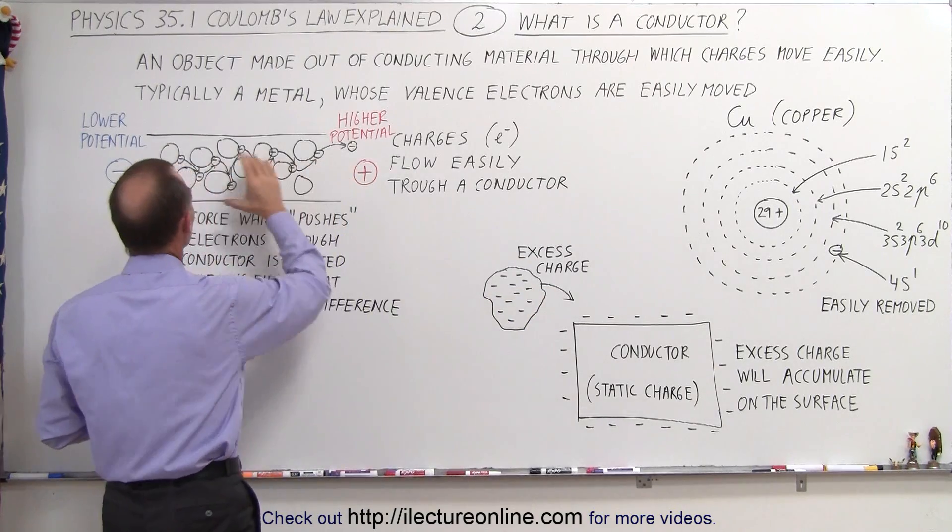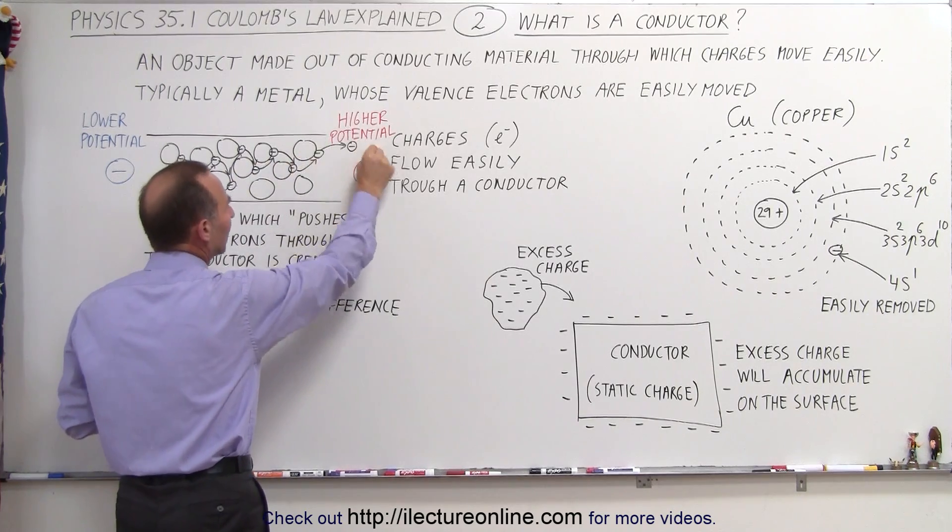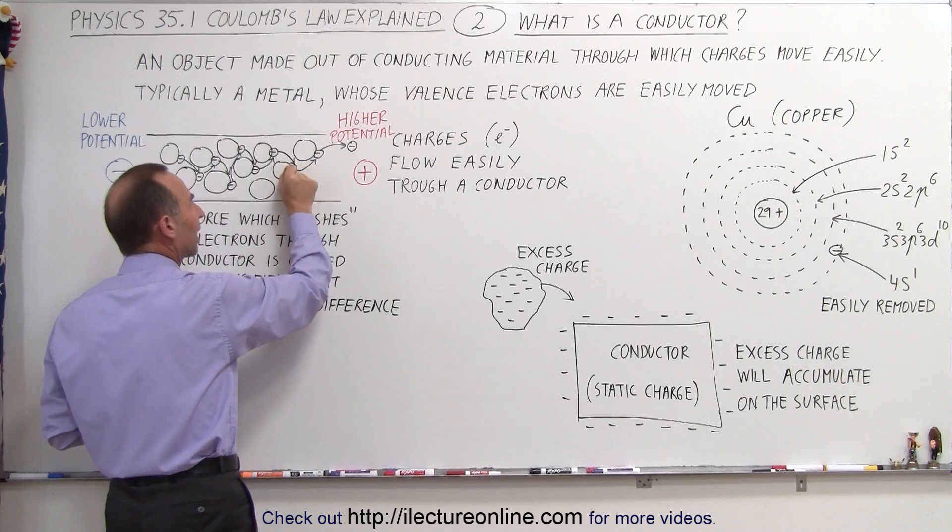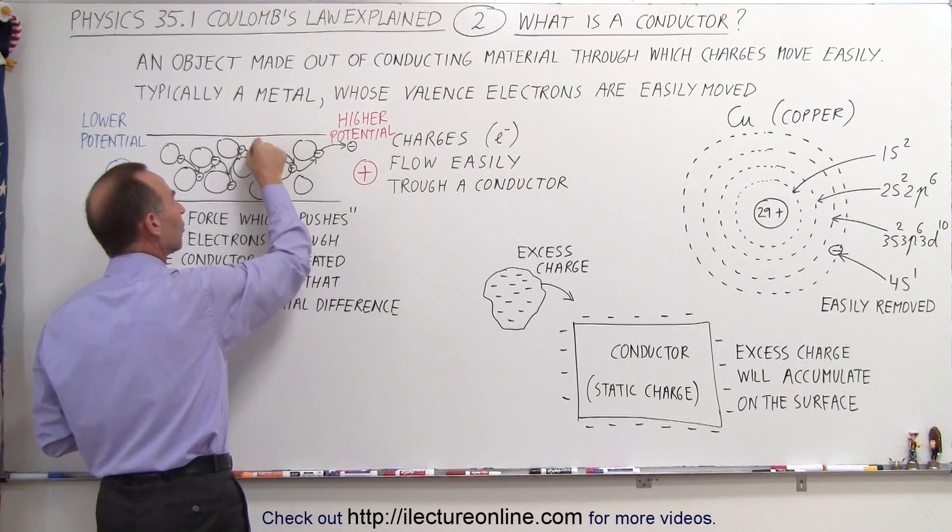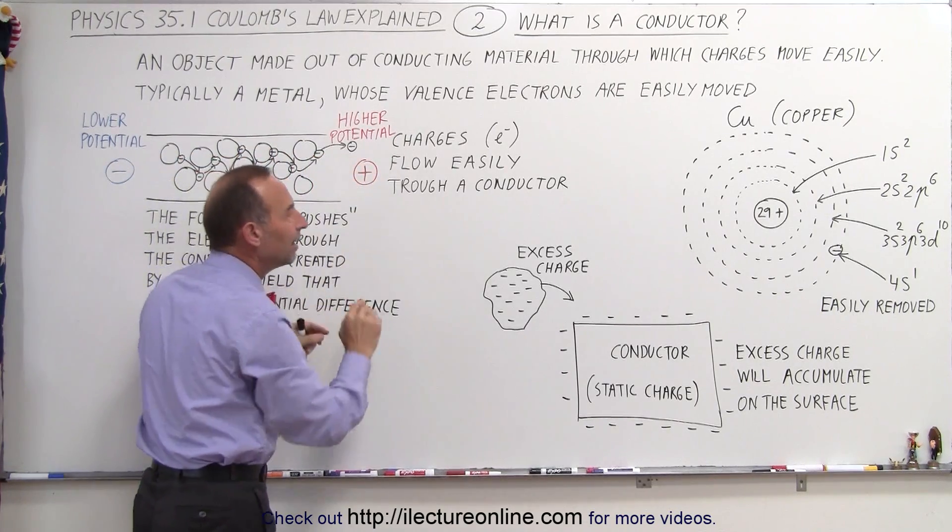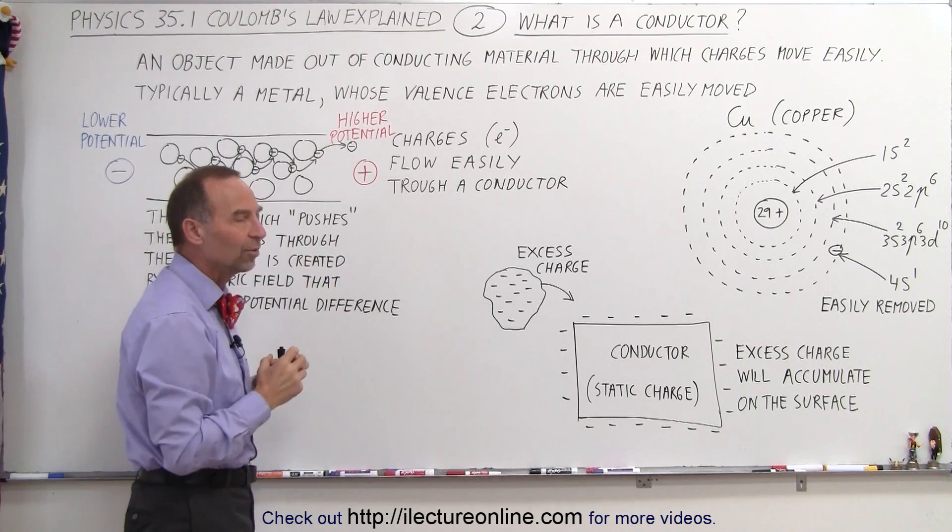So a wire, for example, that's made out of copper, very easily you can push an electron off one of the atoms, which means there's now a space that electron on the next atom can move to. This electron can move to this space, and so forth, so electrons can move through a conductor rather easily because the electrons are easily removed from the atoms themselves.